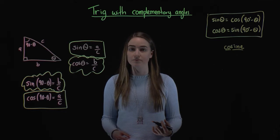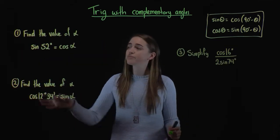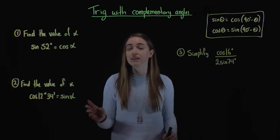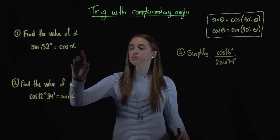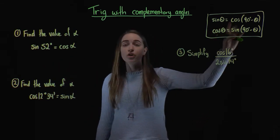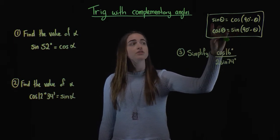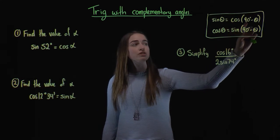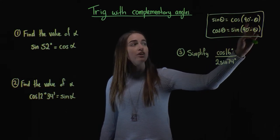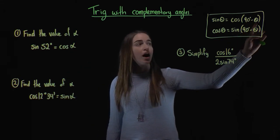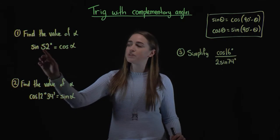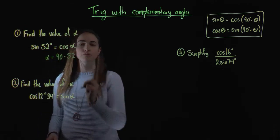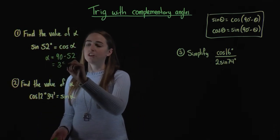Let's have a look at some examples. Our first one asks us to find the value of alpha if sine 52 degrees is equal to cos alpha. We've got sine 52 and we want to write it in terms of cos. Using our complementary angles relationship, sine of 52 is going to be equal to cos of 90 minus 52. So our alpha is going to be equal to 90 minus 52, which means our alpha is going to be equal to 38 degrees.